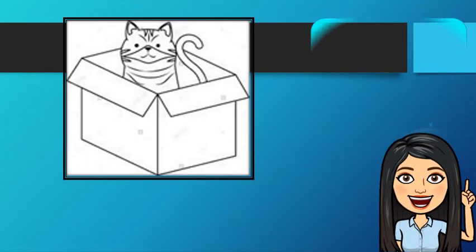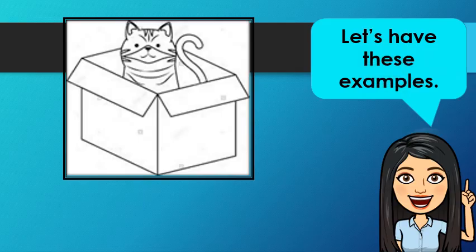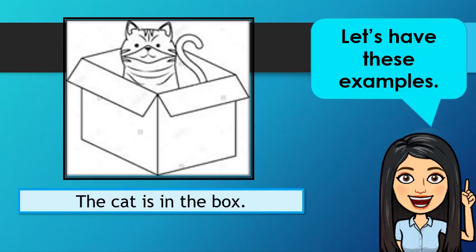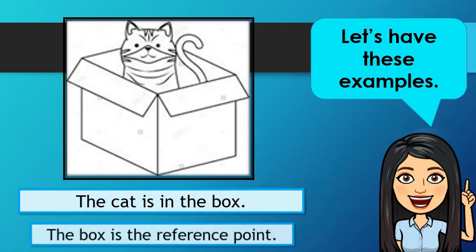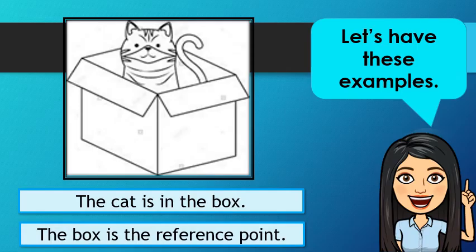Let's have some examples. Look at the picture. Can you tell me the position of the cat? Very good! The cat is in the box. What do you think is the reference point? Good job! The box is the reference point.